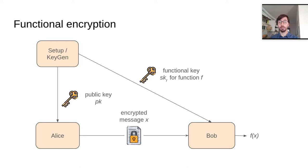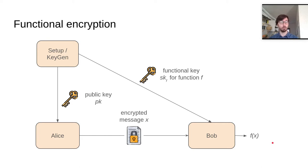And independent of that, the trusted third party is able to produce functional keys depending on a function f, that can be distributed to a decryptor, say Bob, who can with the functional key decrypt from the encryption of message x a function f of x. So the decryptor is able to do computation on encrypted message and decrypt only the result of this function.